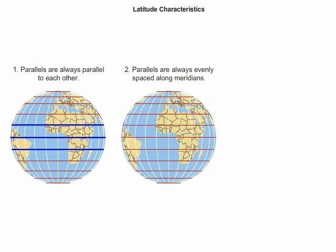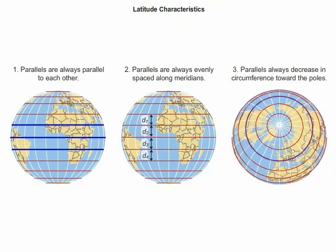Parallels are evenly spaced along meridians. The distance between successive lines of latitude is constant. Parallels always decrease in circumference toward the poles.